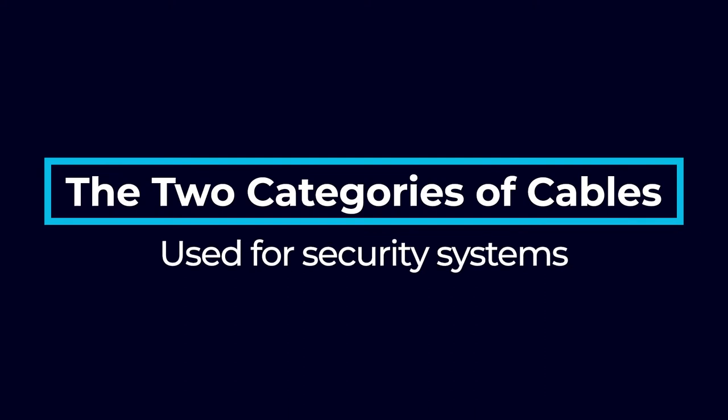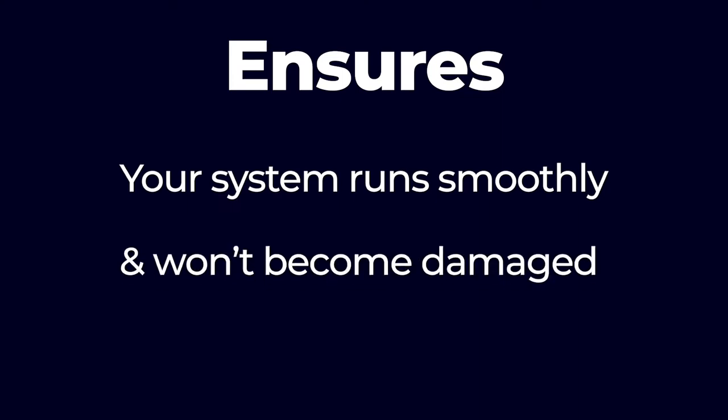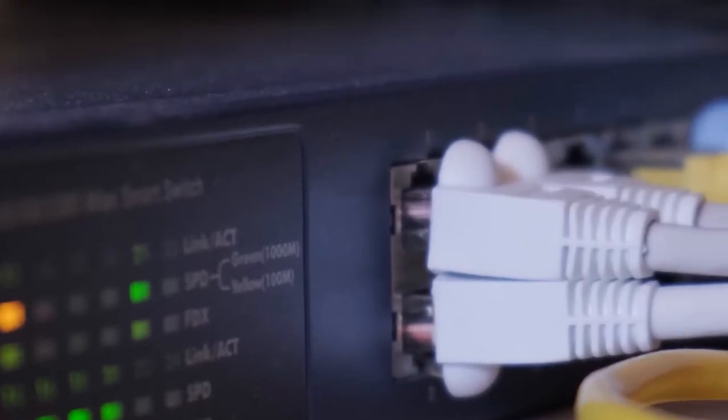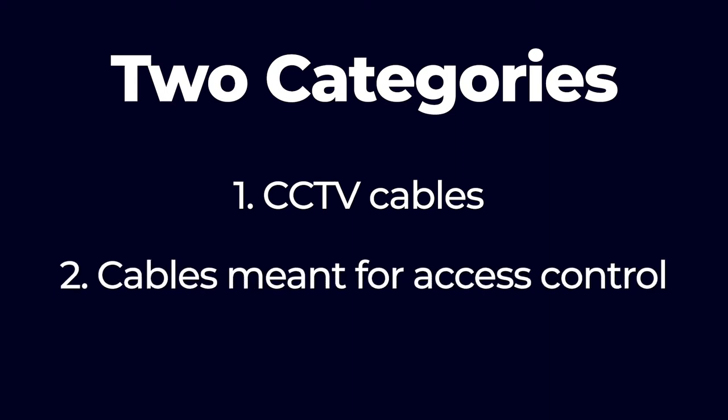To get started, I'm going to go over the two categories of cables used for security systems. If you're looking to set up a security system, whether with CCTV or access control, you'll need to know what kind of cables the system calls for. Using the proper cables for security systems and understanding how they work together ensures your system runs smoothly and won't become damaged from improper equipment. We'll split security cable types into two categories: CCTV cables and cables meant for access control. Each type of cable has a specific purpose to ensure your security system operates effectively.